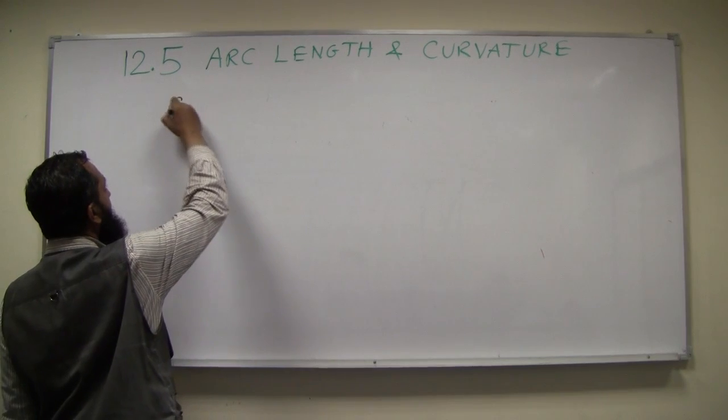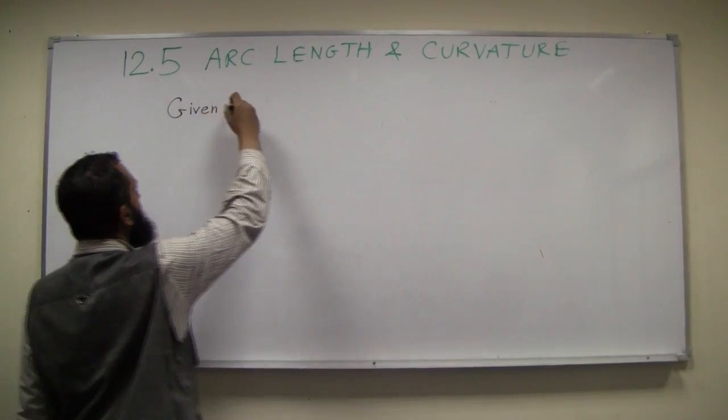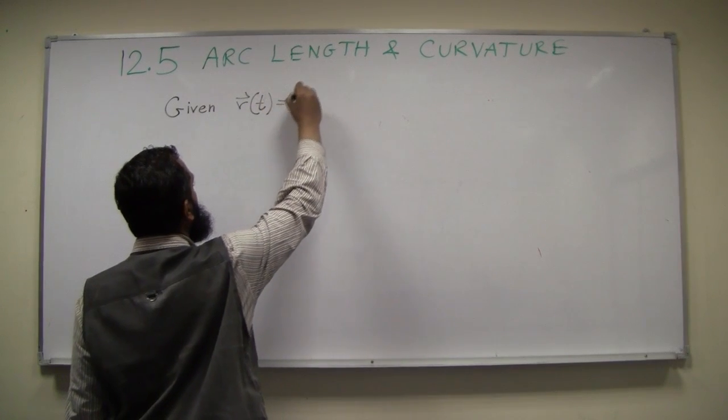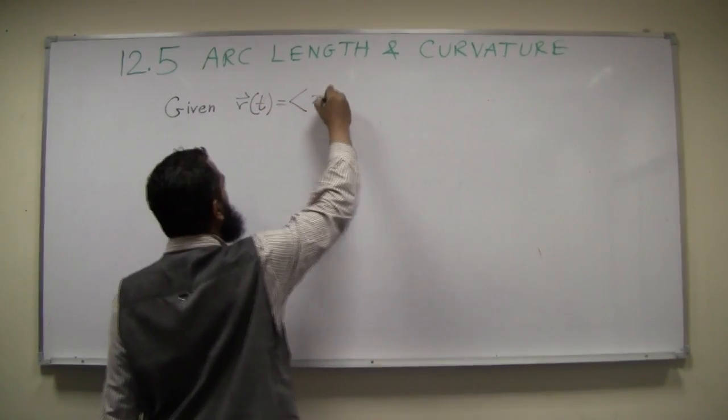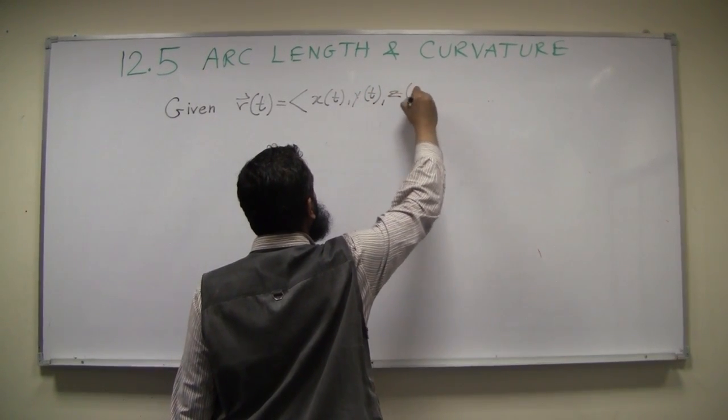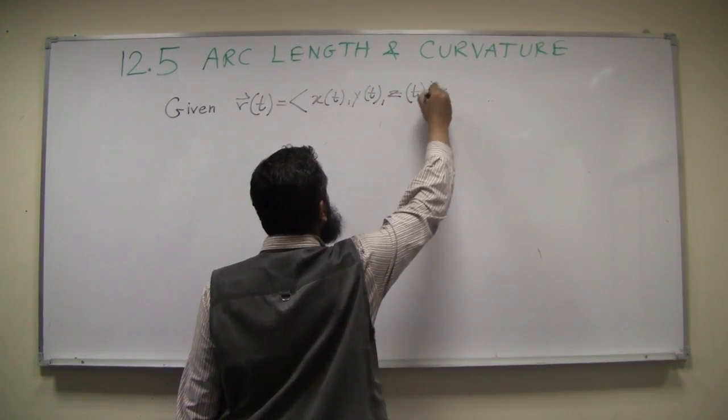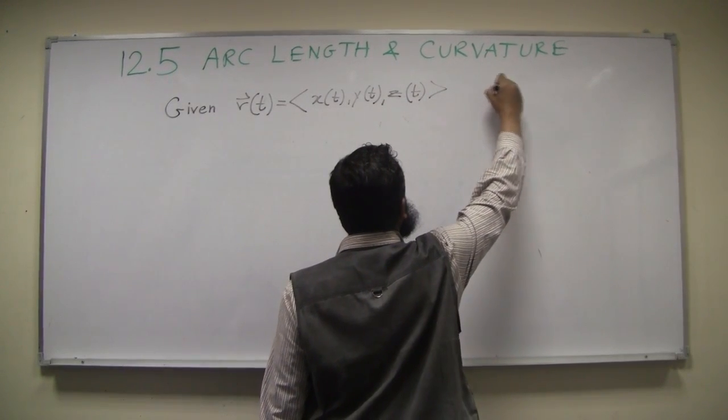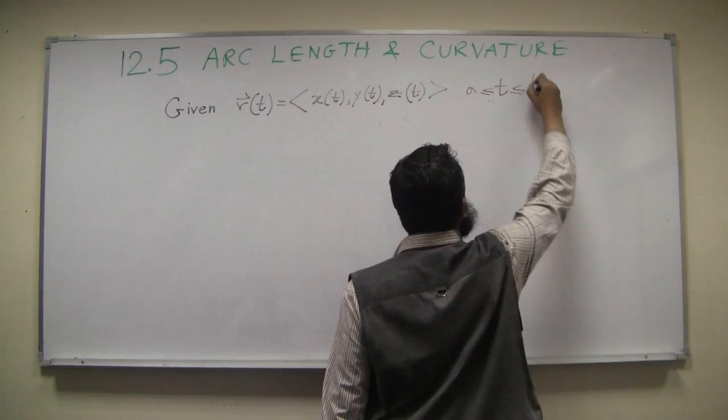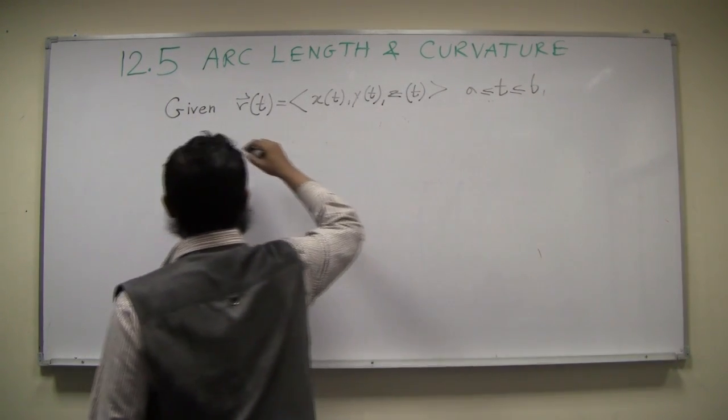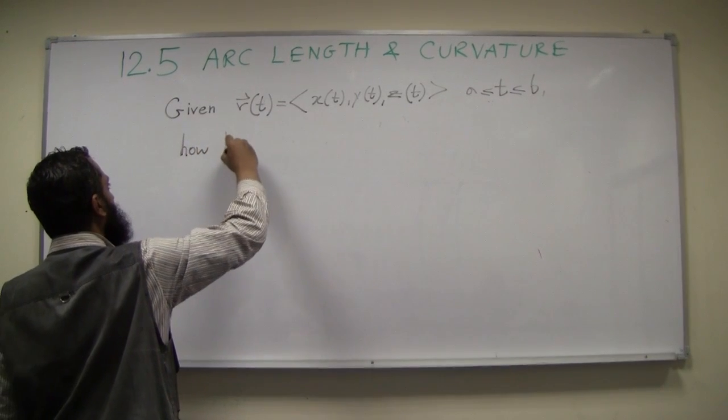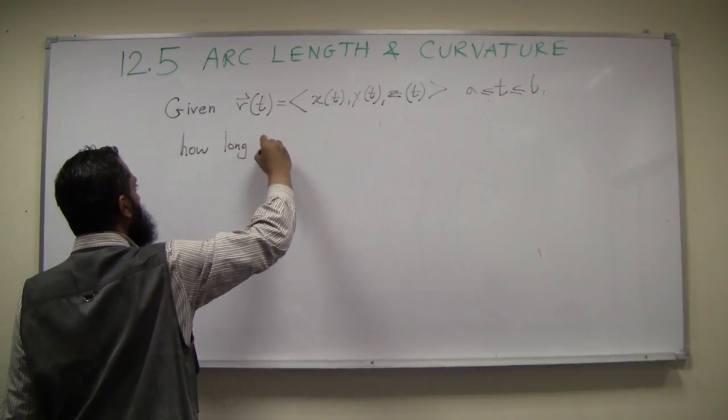So given r(t), a vector-valued function which is x(t), y(t), z(t), and let's say t is between a and b, the question is: how long is this curve?